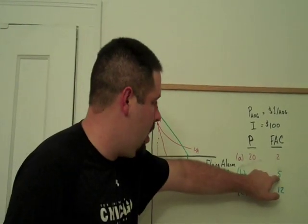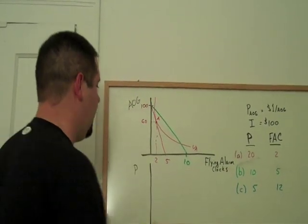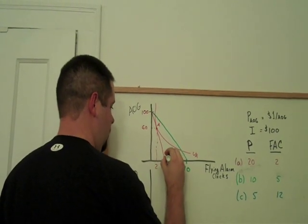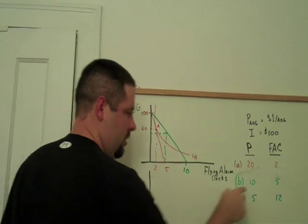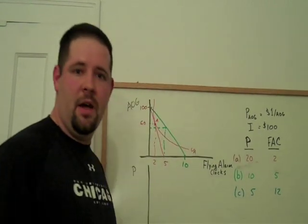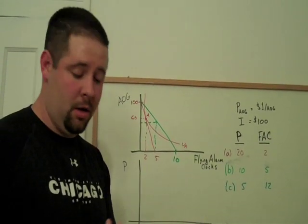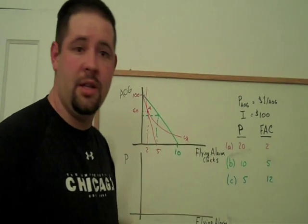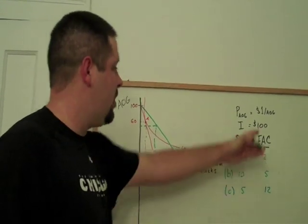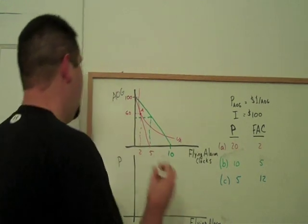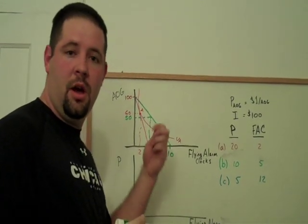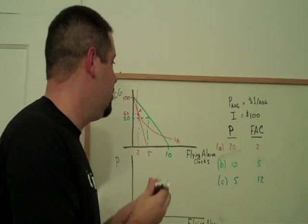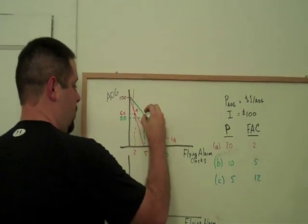Now, this new optimal bundle has five flying alarm clocks. Go ahead and draw a dotted line up to there. And we'll notice that if we buy five flying alarm clocks, each at a price of $10, that spends $50. Subtract that from $100, and we have $50 spend on the other goods that we want in our consumption bundle. So there is point B.